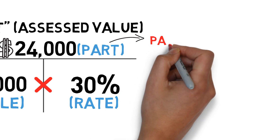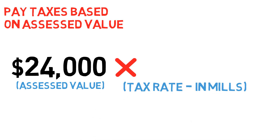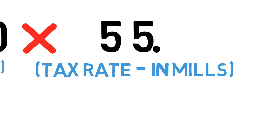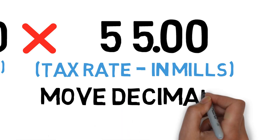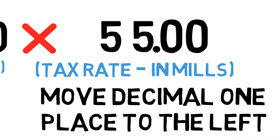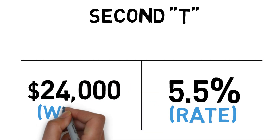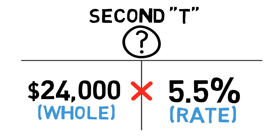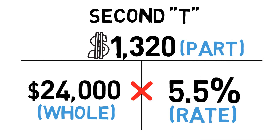We pay taxes based on the assessed value — assessed value times the tax rate. The tax rate is fifty-five mills, written as fifty-five point zero zero. To convert a mill rate to a percentage, move the decimal one place to the left, giving us a five point five percent tax rate. In our second T, five point five percent goes on the bottom right, and the assessed value of twenty-four thousand goes on the bottom left. Multiplying straight across: twenty-four thousand times five point five percent gives us taxes of one thousand three hundred and twenty dollars.